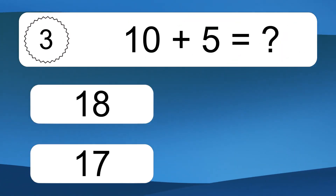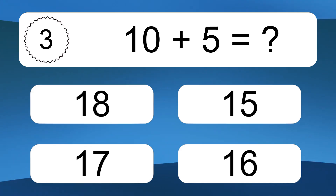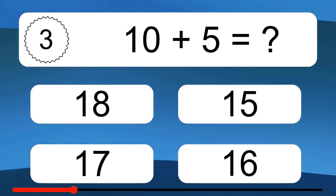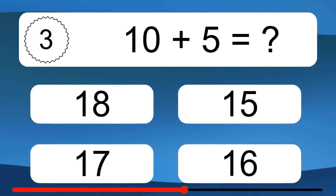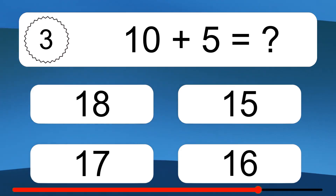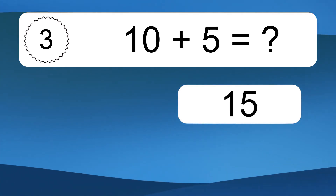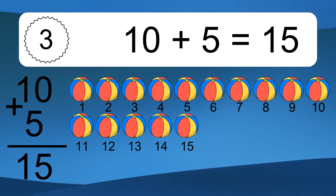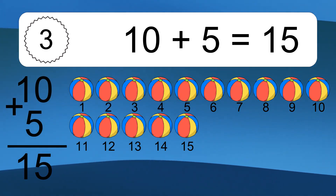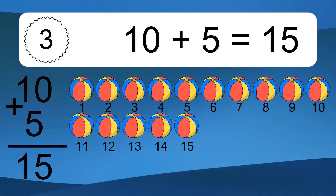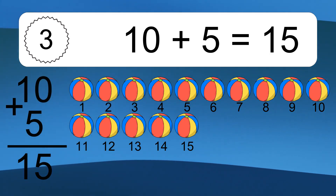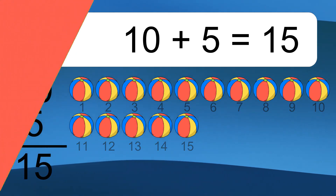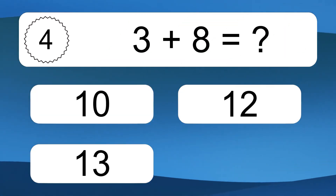10 plus 5 equals what? 10 plus 5 equals 15. Let's count it: 1, 2, 3, 4, 5, 6, 7, 8, 9, 10, 11, 12, 13, 14, 15.